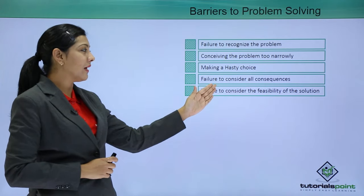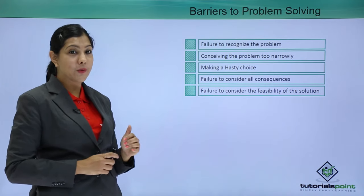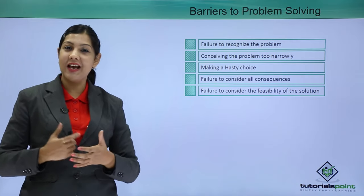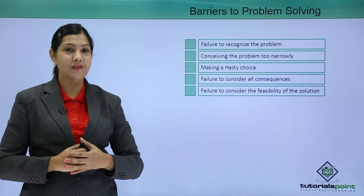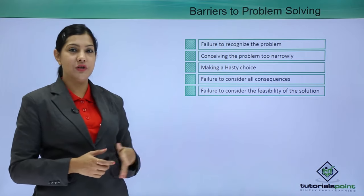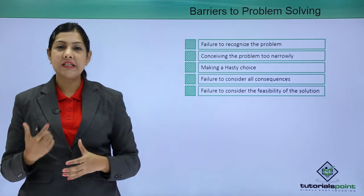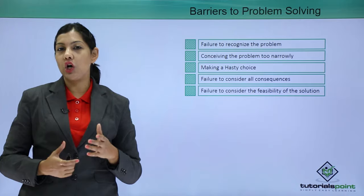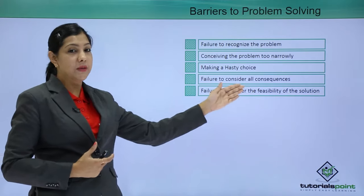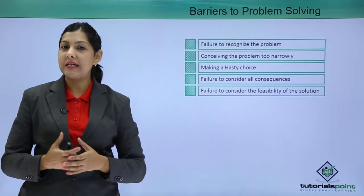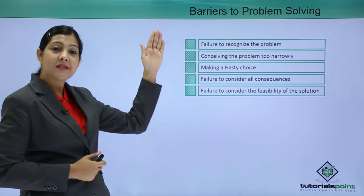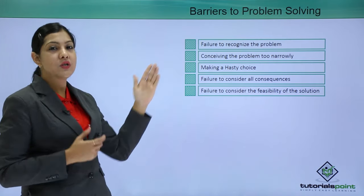Additional barriers include failure to recognize or consider all the consequences — we might not be aware of what consequences can happen when solving this problem. Another barrier is failure to consider the feasibility of the solution — we might not give adequate weight to whether the solution is actually feasible, making decisions in haste that can go against us. These are certain barriers which can come in the way of your problem-solving process.